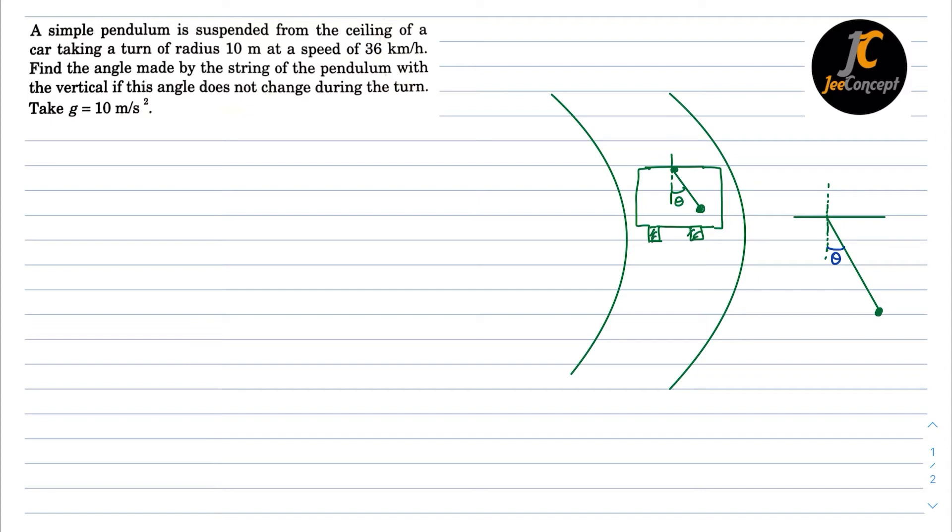So let's say what all forces are acting on it. So initially the mg force will act downward. The centrifugal force which is called pseudo force is acting outward direction which is mv square by r. Let's say this is the tension in the string and it is again making this angle as theta. So this is going to be t cos theta and this is going to be t sin theta and during this circular motion the angle of this pendulum is not changing. So that means the all forces are balanced out with each other.